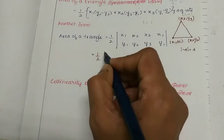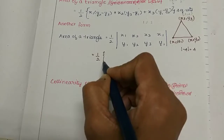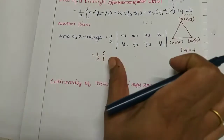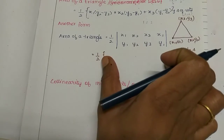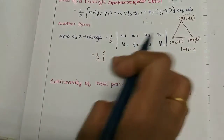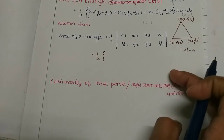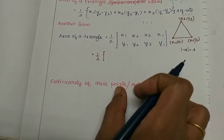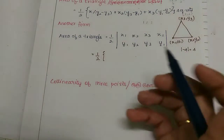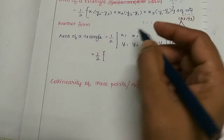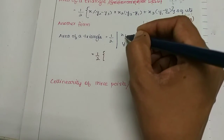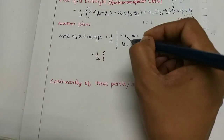How to memorize the formula: half into this bracket — that is the modulus. If we have a minus value, we can take the positive value. Now, how to multiply? Look at x1 — cross multiply.